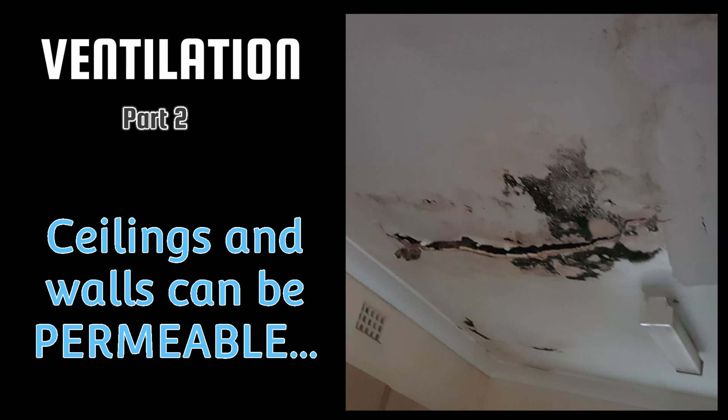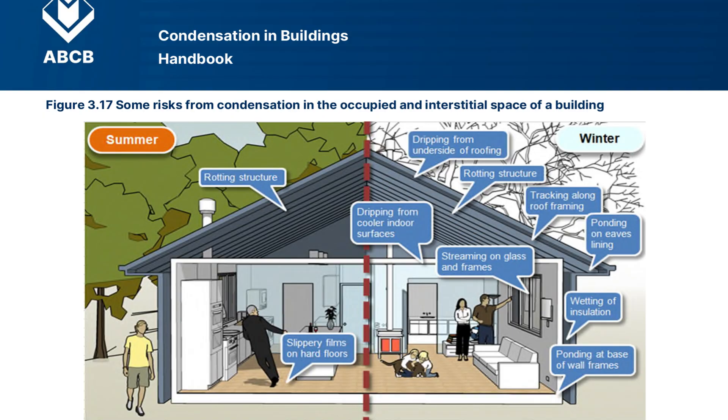This is part two of our ventilation series. Last time we heard about the problems in winter months and why ventilation in your cavities is so important. Let's focus on the roof, because what happens in winter is that at night it's colder outside than inside the house, which means the roof cavity gets a lot colder than your living area, since there's no reason to heat the roof cavity.